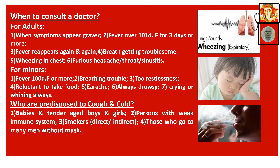Who are predisposed to cough and cold? Number one, babies and tender-aged boys and girls. Number two, persons with a weak immune system. Number three, smokers — direct or indirect. Number four, those who go into crowded areas without a mask.